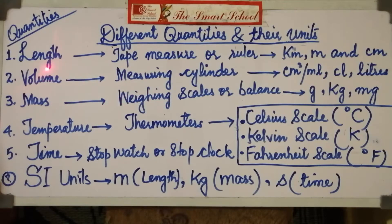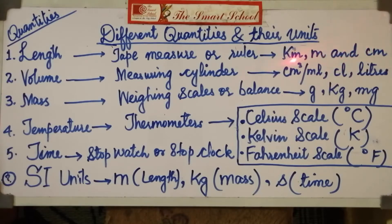First of all, length. The length of an object can be measured with a ruler or a tape measure. Units of length are kilometer, meter, centimeter, and millimeter. These units are normally referred to by their symbols: kilometer as km, meter as m, and centimeter as cm.